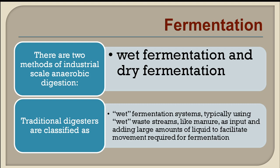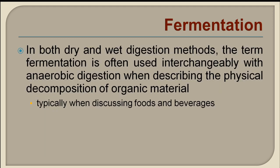Wet fermentation systems typically use wet waste streams like manure as input, adding large amounts of liquid to facilitate movement required for fermentation — you need to mix it up properly. In both dry and wet digestion methods, the term fermentation is often used interchangeably, as mentioned in the last lecture on biogas plants, where fermentation and anaerobic digestion are used interchangeably in almost all occasions.